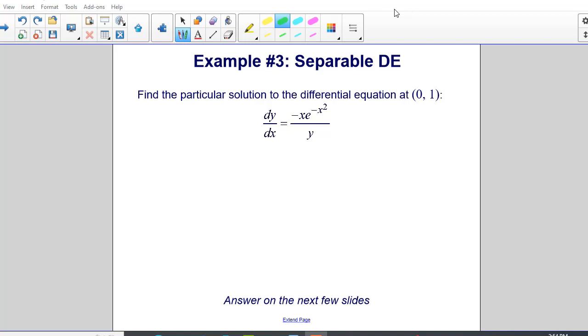Example number three. Find the particular solution to the differential equation at the point zero one. And the differential equation we are considering is dy dx is equal to negative x times e to the negative x squared power all over y.